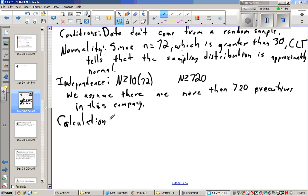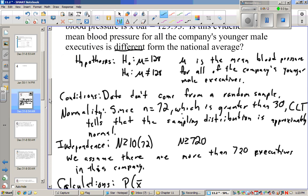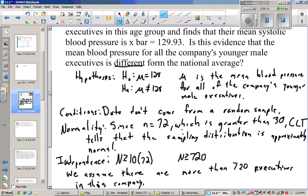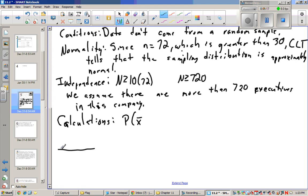So now, for the calculations, we're going to first check out our z-statistic. Actually, let's just do that. What we'll do is we'll do the probability that our x̄ is, so our x̄ is 129. So when we draw this out, if the mean is 128, we're going to have 129.3.